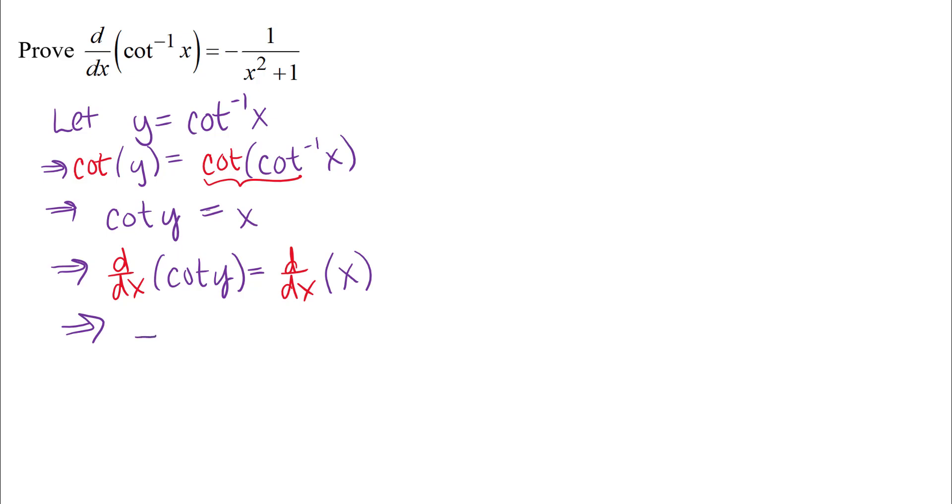Okay, so I can go ahead and do this derivative on the left side here. Derivative of cotangent is negative cosecant squared of y times the derivative of what's inside, that's the implicit differentiation part. And then on the right side I just get one and we're going to solve for dy dx.